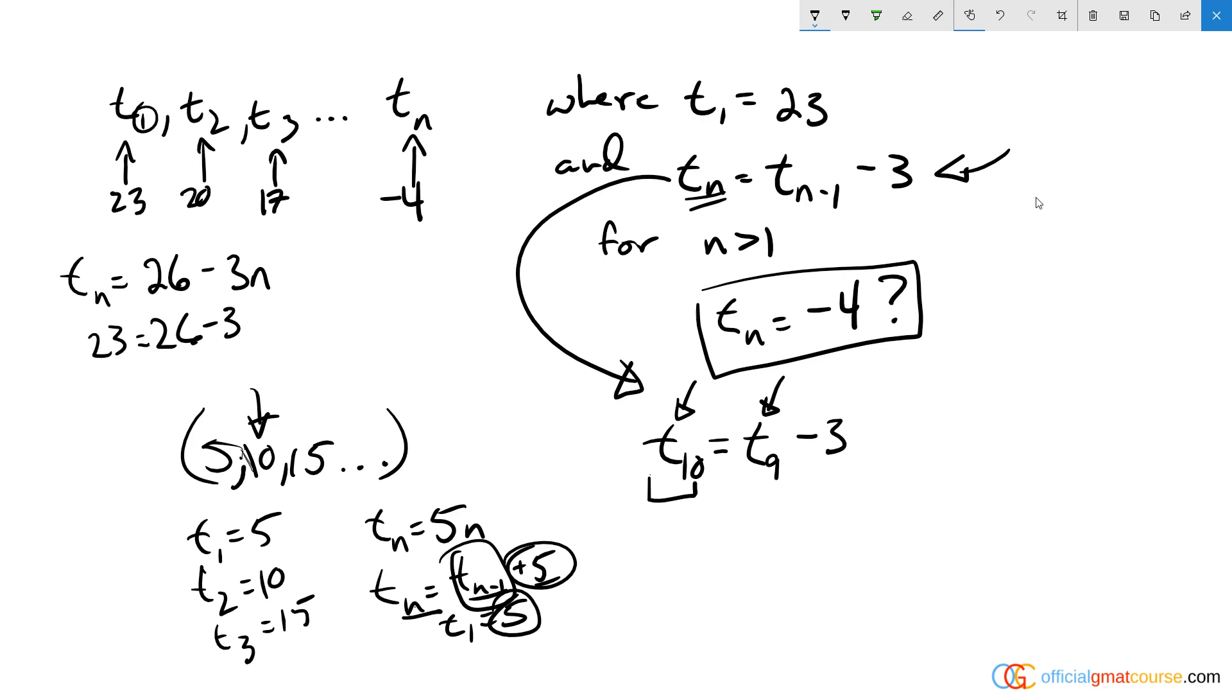And for the second number, 20 is equal to 26 minus 3 times 2, which is true. So I just converted it to something that's more usable for me. Now I'm saying, okay, negative 4 is equal to 26 minus 3n.